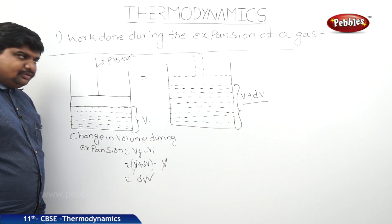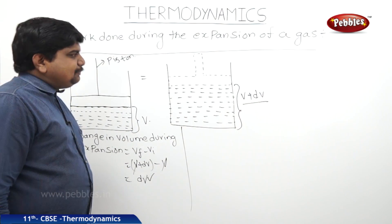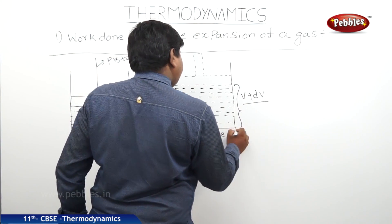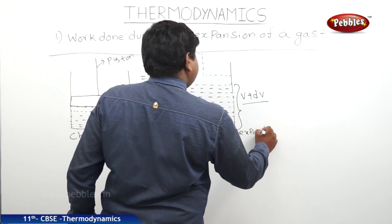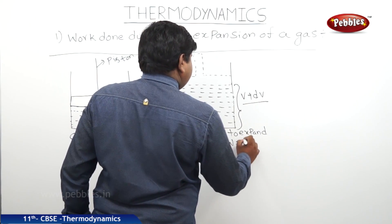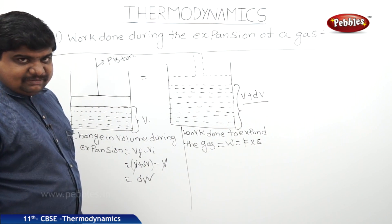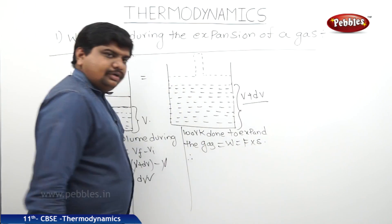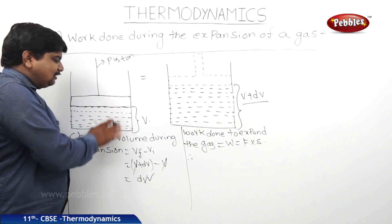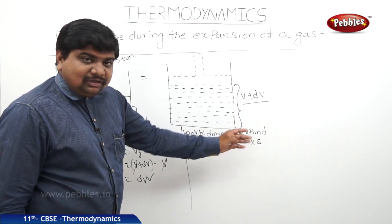The change in volume is dV. What we can expect, what is the work done to expand the gas? Work done to expand the gas equals W equals F into S, where F is force and S is displacement. Here the force is based on the pressure applied because the piston is applying pressure on the gas molecules. We should convert the force on the gas molecules in terms of pressure.